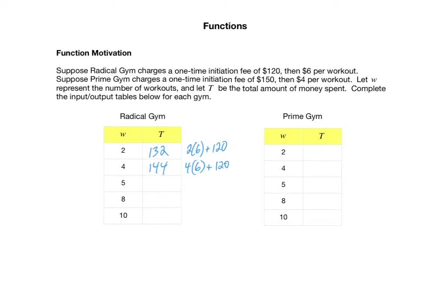We can continue in this fashion, or notice if the person worked out one additional time, that would cost another $6, so this goes up to $150. If they went from five to eight workouts — three more — three sixes would be $18 more, giving $168. For 10 workouts, they pay $6 ten times plus the $120 initiation fee: $60 plus $120 gives $180.